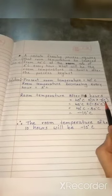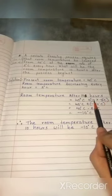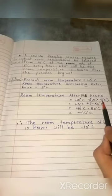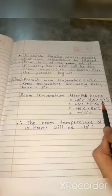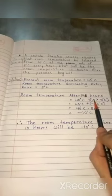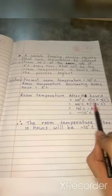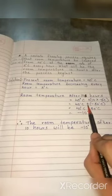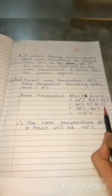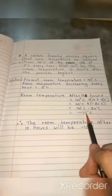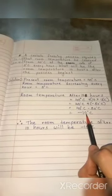And what will be the temperature after 10 hours? So, we will multiply minus 5 degree Celsius into 10 first. That will be minus 50 degree Celsius. 40 degree Celsius plus minus 50 degree Celsius is minus 10 degree Celsius.